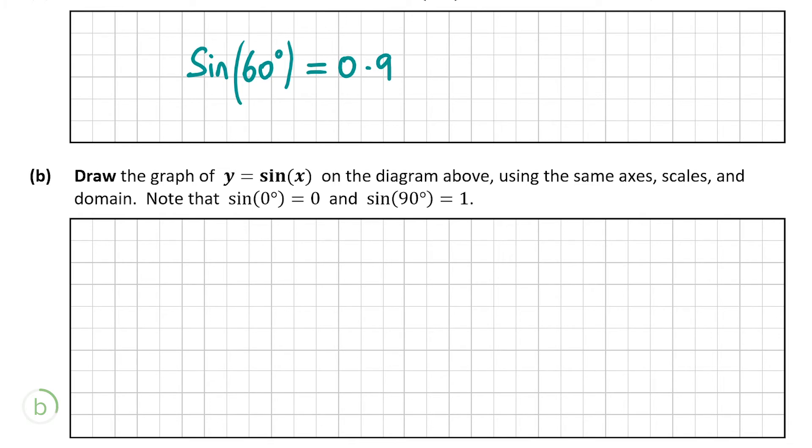We have the point sin(0°) is 0, sin(60°) is 0.9 and sin(90°) is 1. So with these three points we can now draw in the graph of y equals sin(x).